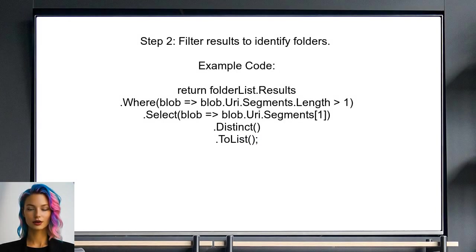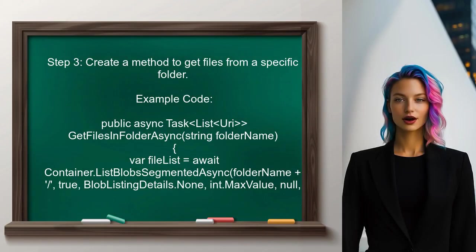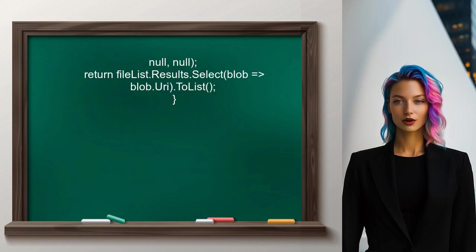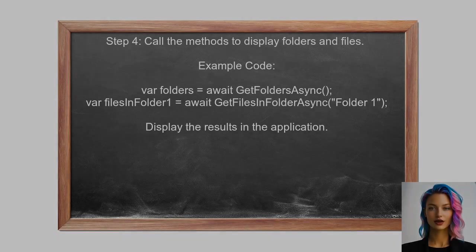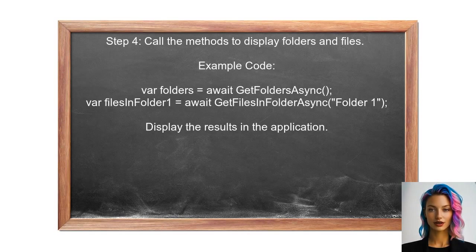Next, the user should ensure that they are filtering the results correctly. They can achieve this by checking the segments of the blob URIs to identify which ones represent folders. After obtaining the list of folders, the user may want to retrieve files from a specific folder. To do this, they can create another method that accepts a folder name as a parameter. Finally, the user can call these methods in their application to display the folders and files as needed.